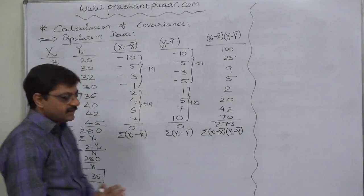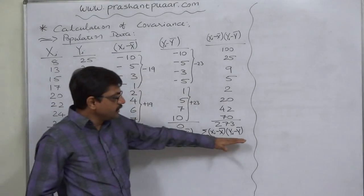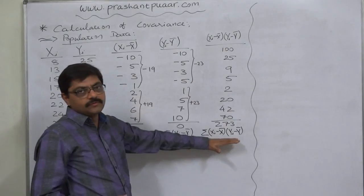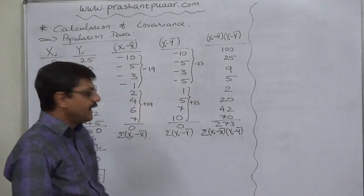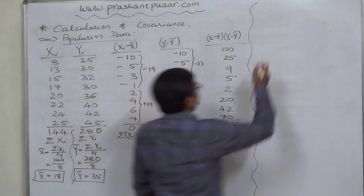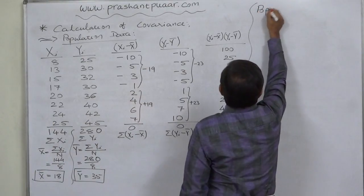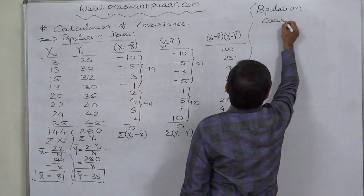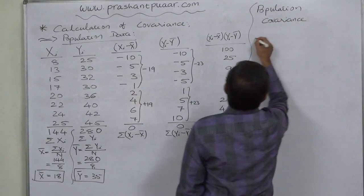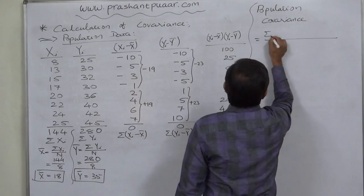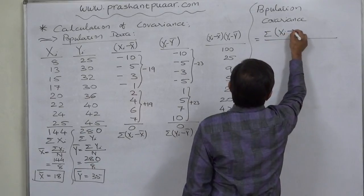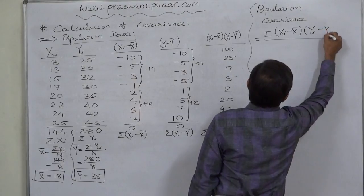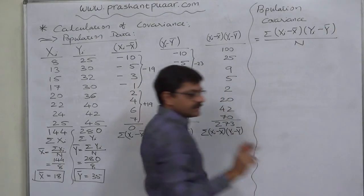Now, we have all the required factors, sigma x minus x bar into y minus y bar. That means summation of the products of the deviations taken from mean and the population size, 8. So now, we can calculate the population covariance.